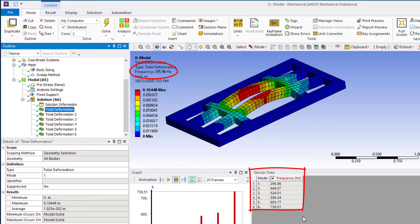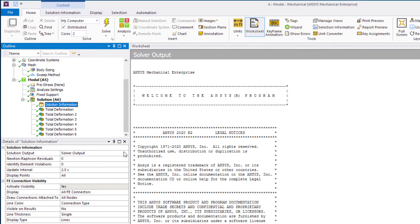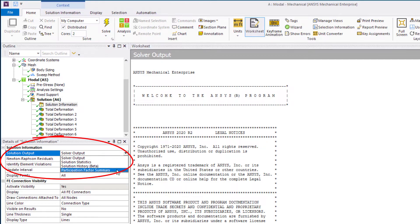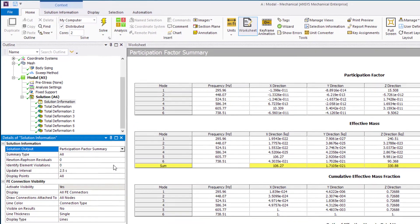Let's look closer into the participation factors and effective mass. Click on the solution information and under solution output select participation factor summary to see participation factor and effective mass tables.